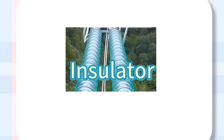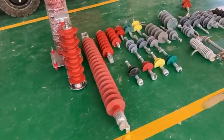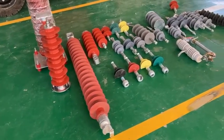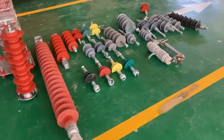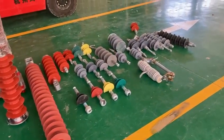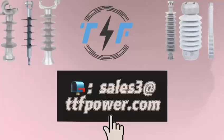So people thought of adding an insulator between the line and the pole to reduce the occurrence of electrical flashover. Let's take a look at the various types of insulators produced by TTF factory and made of various materials.